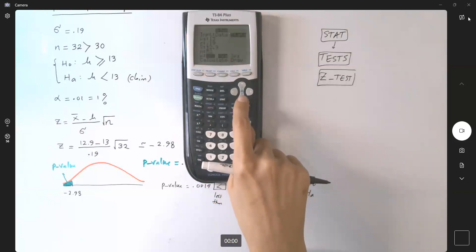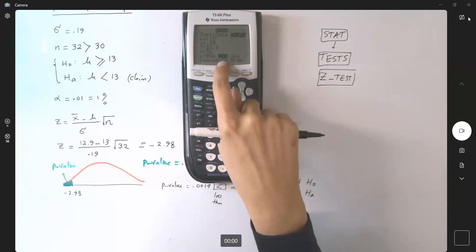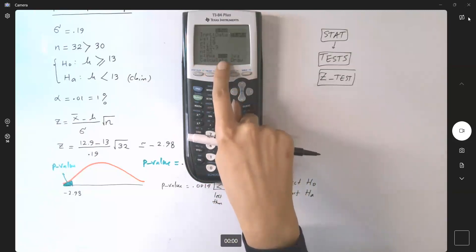And since it's the left tail, you're going to select the middle one, left tail, less than. And then you're going to go to compute.